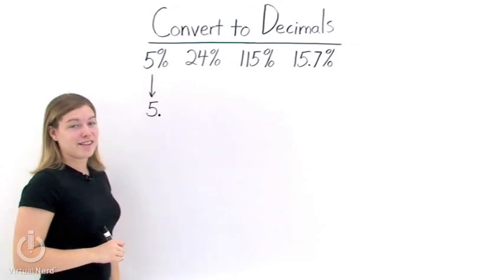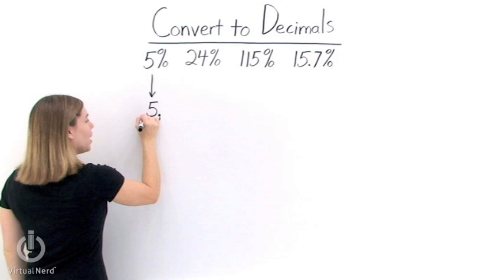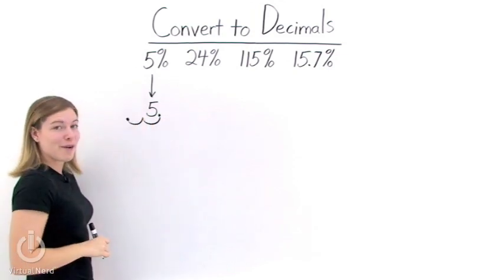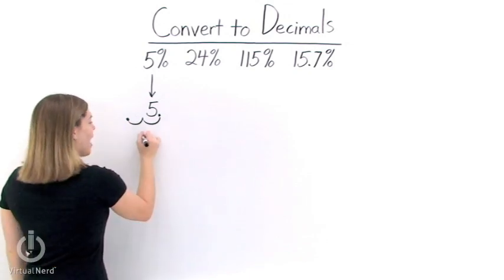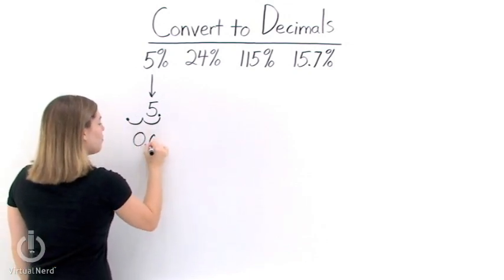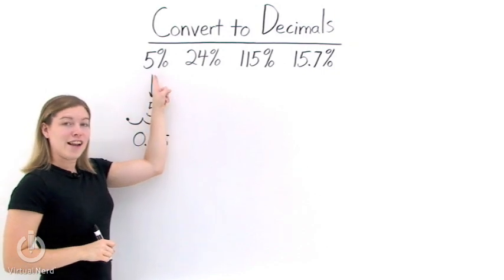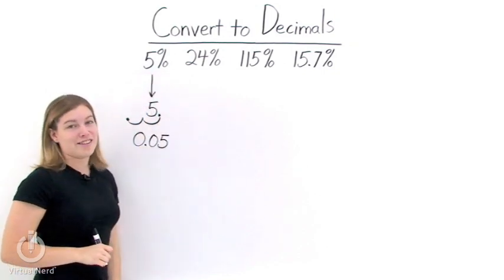Now, we need to move it two places to the left. So we move one, two places to the left, and we rewrite it. Now, since there's a space here, we just put a zero there. And we get the decimal 0.05. So 5% is the same as the decimal 0.05.